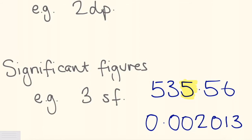Have a look at the second example, 0.002013. The first significant figure in this number is the first number that's not a zero. So the first significant figure is actually the two. The second significant figure is the zero after the two. We do count the zeros after the first significant figure. The zeros before it we ignore, but the zeros after the first significant figure we do include. So the third significant figure in this number is the one.